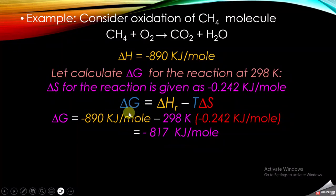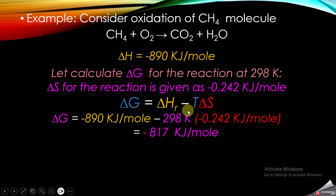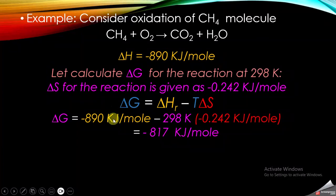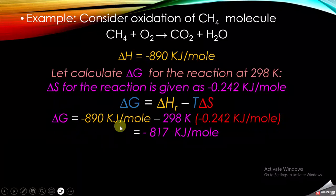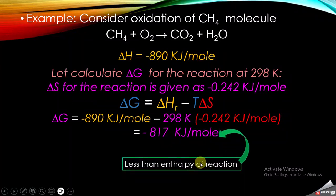We have the formula: delta G is equal to delta H minus T delta S. For calculating delta G, we are given the change in entropy and the temperature. This reaction is taking place at 298 Kelvin, so we put T equal to 0.298. The change in entropy is minus 0.242, and the enthalpy of the reaction is minus 890 kilojoule per mole. Solving this equation, the free energy comes out to be minus 817 kilojoule per mole, which is definitely less than the enthalpy of the reaction.